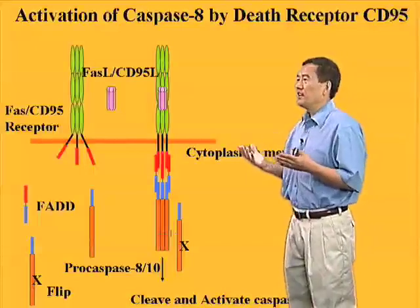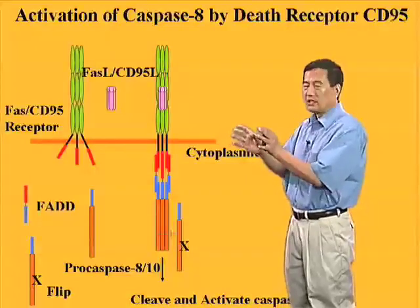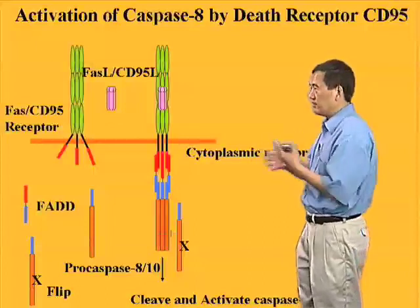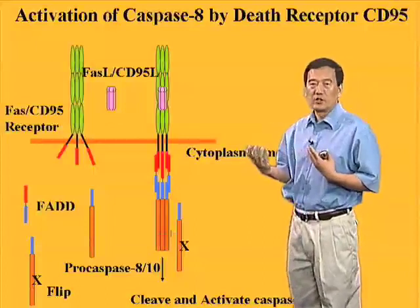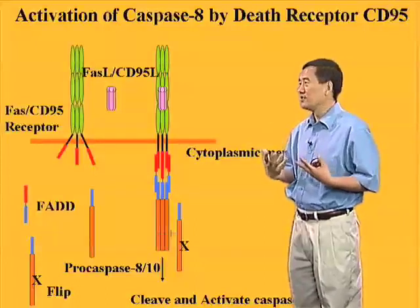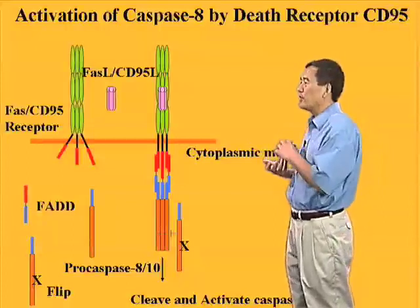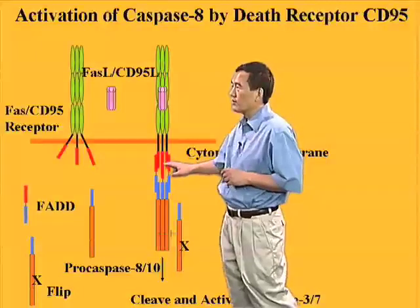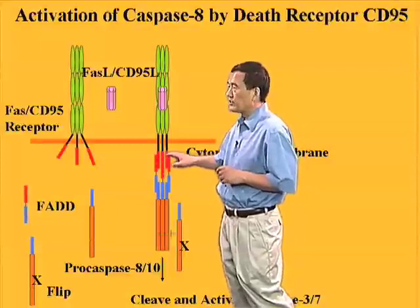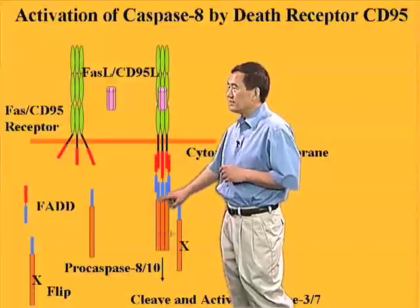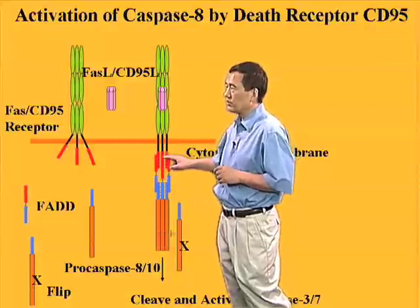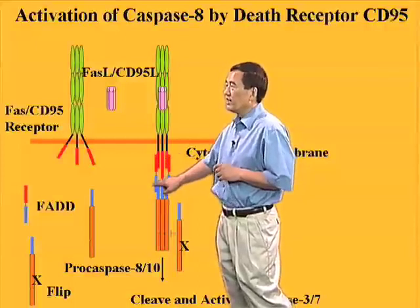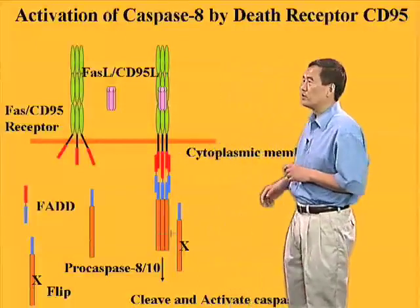The FADD protein is essentially a protein with two domains linked by a linker region. One domain is also a death domain, which is very similar to the receptor's death domain — they form a kind of secret handshake to find their partner. The FADD protein, in addition to the death domain, also has a domain called the death-effector domain, or DED domain, shown here in blue.